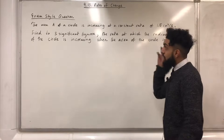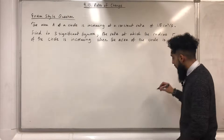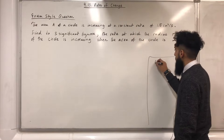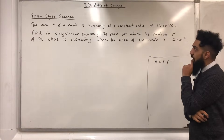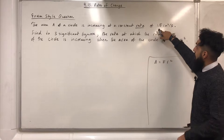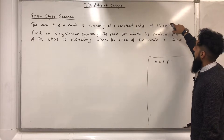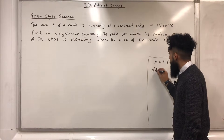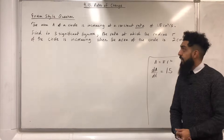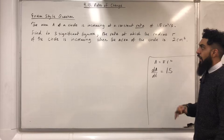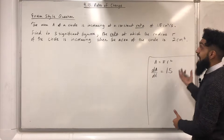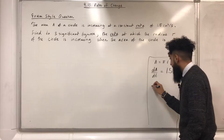When it comes to these problems, I advise you to extract as much information as possible from the question. First, we have a circle — the formula for the area of a circle is A equals pi r squared. We're told the area is increasing at a constant rate of 1.5 centimeters squared per second, so da over dt equals 1.5. We need to find the rate at which the radius is increasing — that's dr over dt.